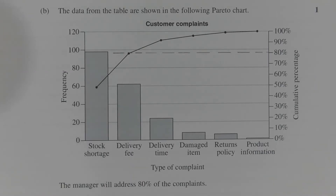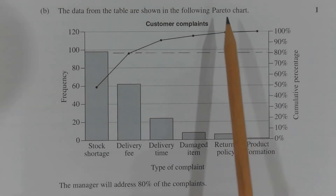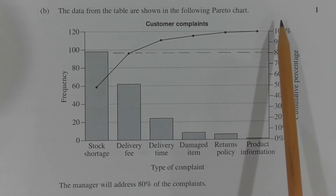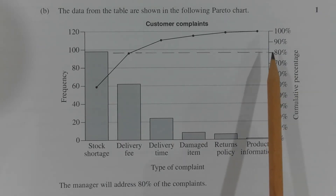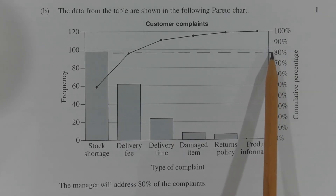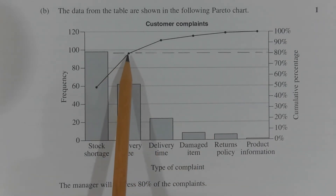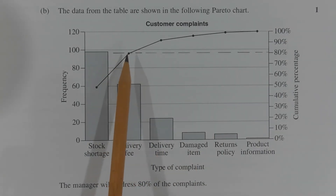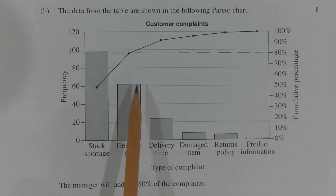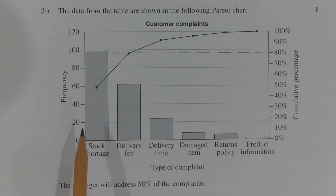There are two ways of answering this question. The first way is to refer to the Pareto chart. Referring to the cumulative percentage axis and drawing a dotted line from the 80% mark all the way across, we can see that the dotted line crosses a point representing the cumulative percentage of delivery fee and stock shortage combined. So 80% of the complaints involve stock shortage or delivery fee.